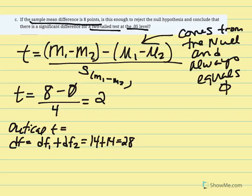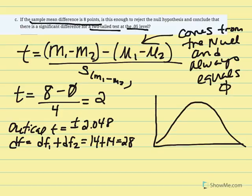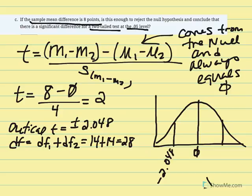Our critical t is equal to 2.048, which we use to set our critical region. The center represents mu1 minus mu2 equal to zero — no difference between populations. Our critical region boundaries are set at negative 2.048 and positive 2.048. If our t statistic falls beyond either boundary, we get to reject the null.